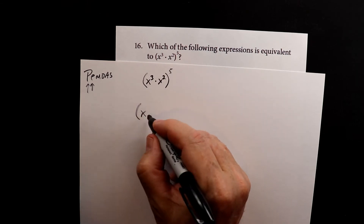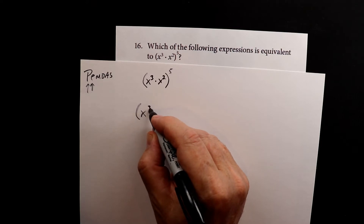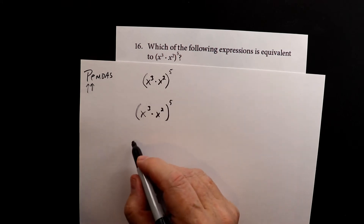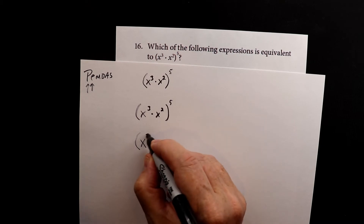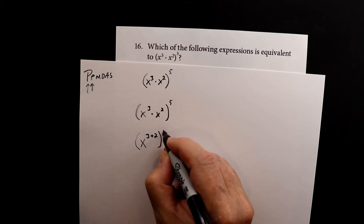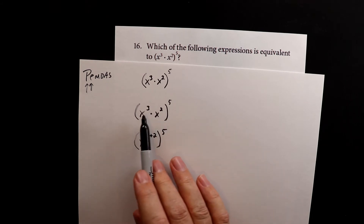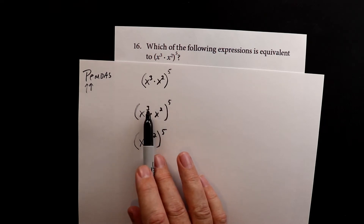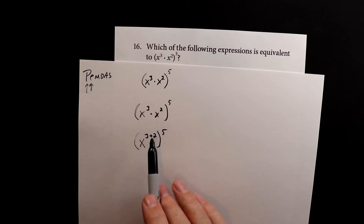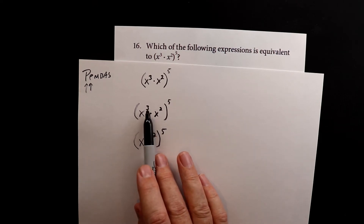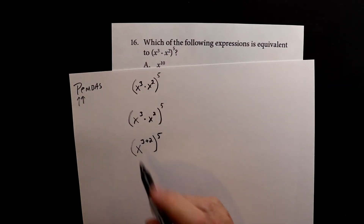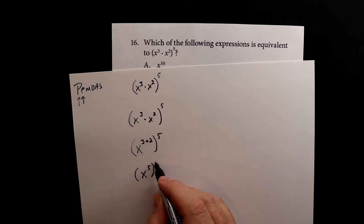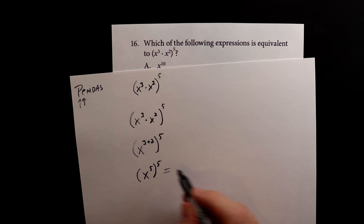So the first thing I want to do is figure out what's in the parentheses. When we have two exponents multiplying, we add the exponents. So three and two — it's still to the fifth power — this is the same as x to the three plus two, to the fifth power. When you're multiplying two bases with the same base but different exponents, you add them. If it was division you'd subtract, but since they're multiplying, you add: three plus two equals five. So we have x to the fifth, to the fifth power.